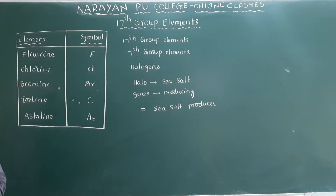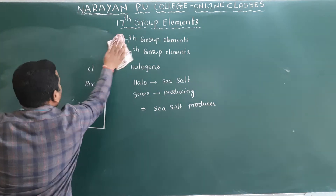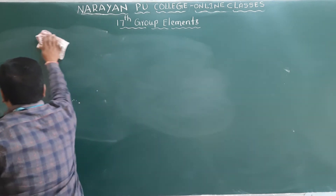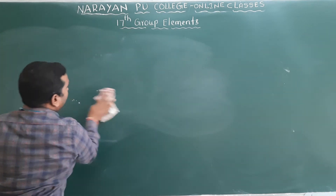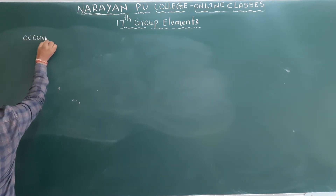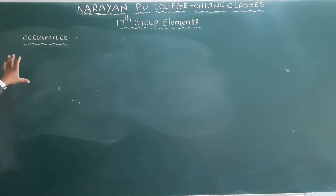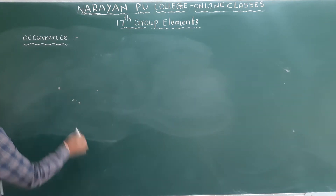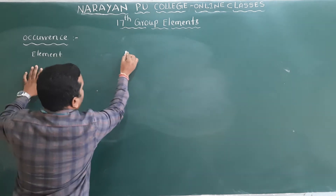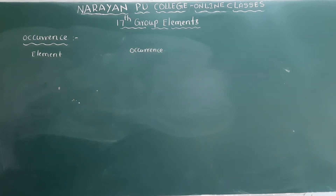Now we will discuss the occurrence — where these elements are available and in what form. Put the heading: occurrence. We will go through each element one by one. Make a table with columns for element and occurrence.